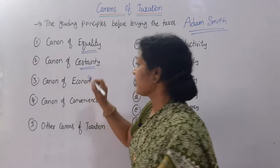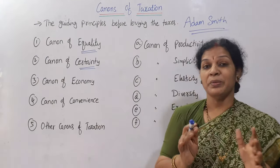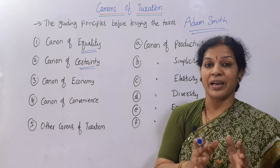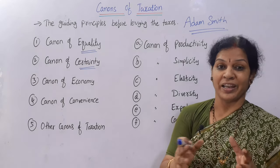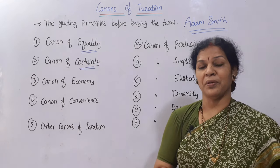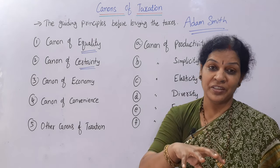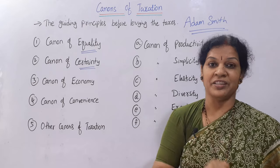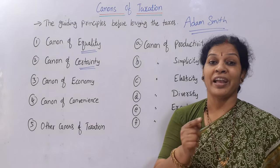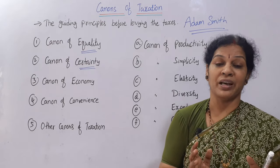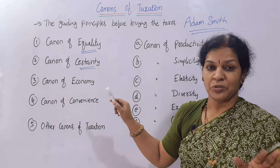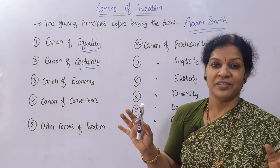The second canon is the canon of certainty. There should be a clear structure and definite plans about income and tax policy. The tax policy must be clear to the government, and the same clarity should also be given to the taxpayers — assessees should have good clarity about this. There should be no misguidance or confusion.